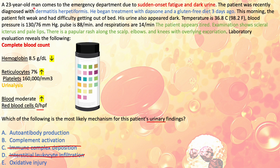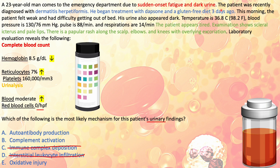Reading the vignette: a 23-year-old man — note the demographic, since many hemolytic anemias are X-linked. He presents with sudden onset fatigue and dark urine due to hemoglobinuria. He was recently diagnosed with dermatitis herpetiformis, associated with celiac disease, and began treatment with dapsone and a gluten-free diet three days ago. A new drug introduction in hematology questions guides you toward autoimmune hemolytic anemia or G6PD deficiency. Symptoms appeared just three days after starting the drug.